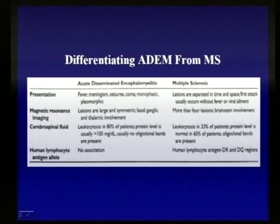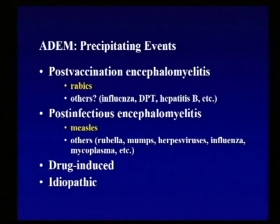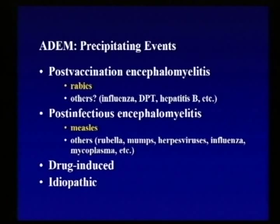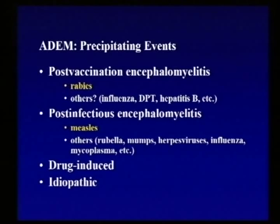What I really want to concentrate on is what precipitates or triggers this disease, because if we can understand what activates the immune system, those may provide very valuable lessons for other neuroimmunologic disorders like transverse myelitis. Many things are associated with the onset of ADEM. I'm going to concentrate on the disease that follows a certain type of vaccine and the disease that follows a certain type of infection, leaving the idiopathic, drug-induced, and traumatic cases aside because we don't understand them very well.